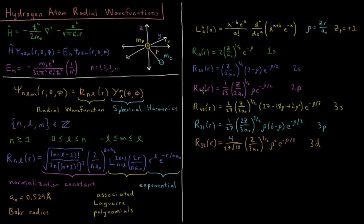r21 of r is the 2p radial function, n equals 2, l equals 1. Constant times rho, e to the minus rho over 2. Notice these are decaying faster now at higher values of n, because they're divided there.